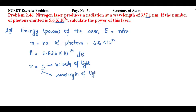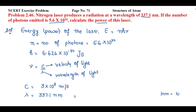c equals 3 into 10 raised to power 8 meter per second. λ equals 337.1 nanometer. Since c is in meters, we need to convert nanometers to meters. We know 1 nanometer equals 10 raised to power minus 9 meter, so λ = 337.1 into 10 raised to power minus 9 meter.